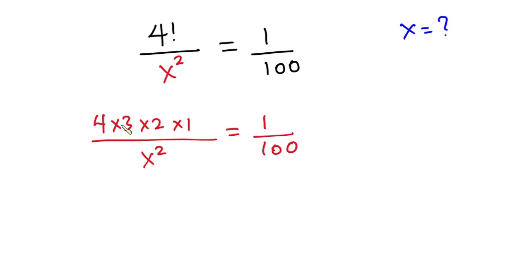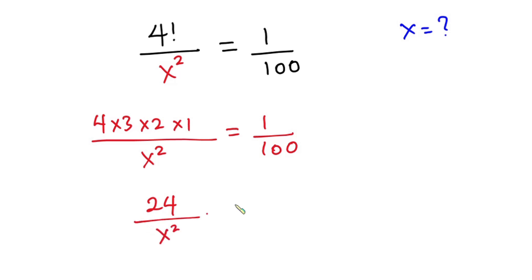4 times 3 is 12, then 12 times 2 is 24, then 24 times 1 is still 24. So we have 24 over x squared is equal to 1 over 100.